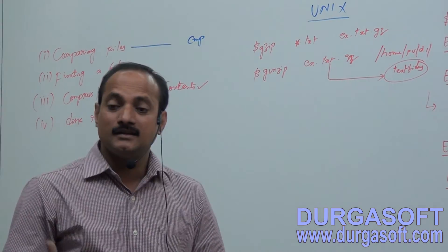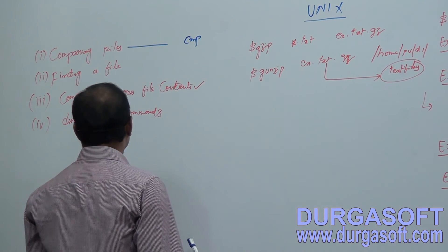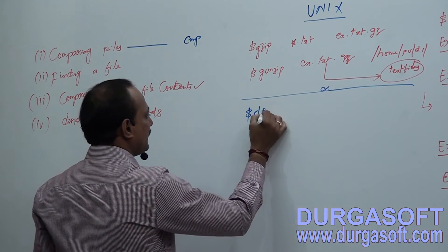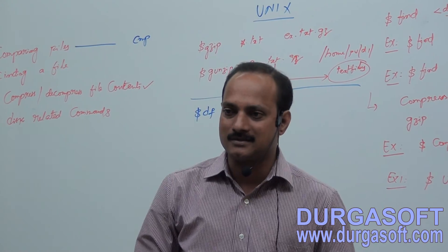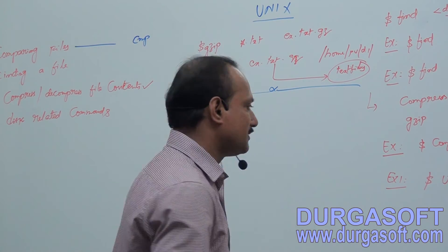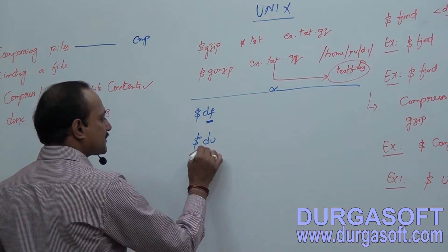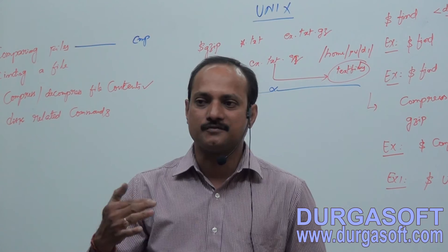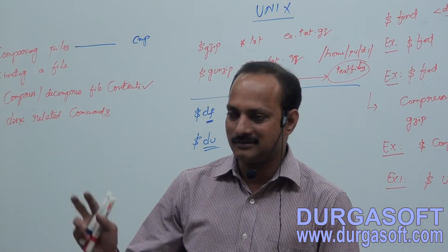These are the compression and decompression commands. Next are disk-related commands. The df command displays the disk file system — which file systems exist and how much size each occupies. The du command shows disk used — it displays the used blocks of disk by each file system. That covers these miscellaneous commands. Thank you very much.